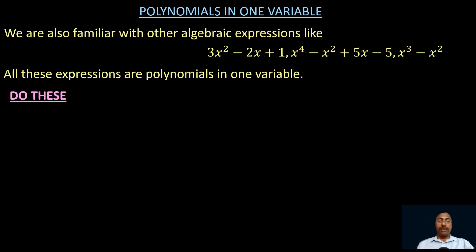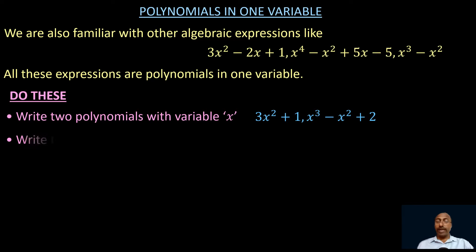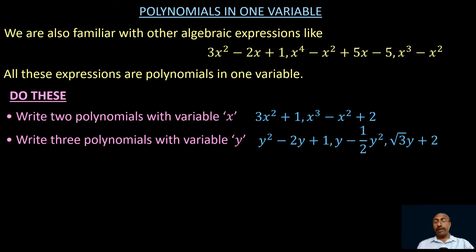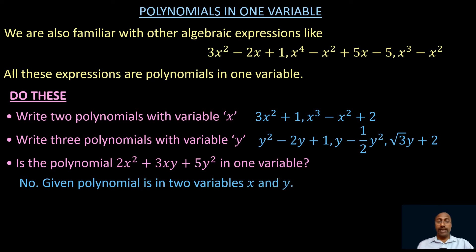Let us do some problems. Write two polynomials with variable x: 3x square plus 1, and x cube minus x square plus 2. Write three polynomials with variable y: y square minus 2y plus 1, y minus half y square, and √3·y plus 2. Is the polynomial 2x square plus 3xy plus 5y square in one variable? No — because it has two variables, x and y.